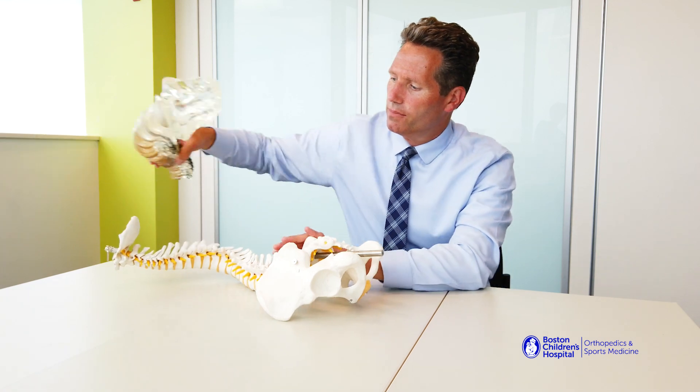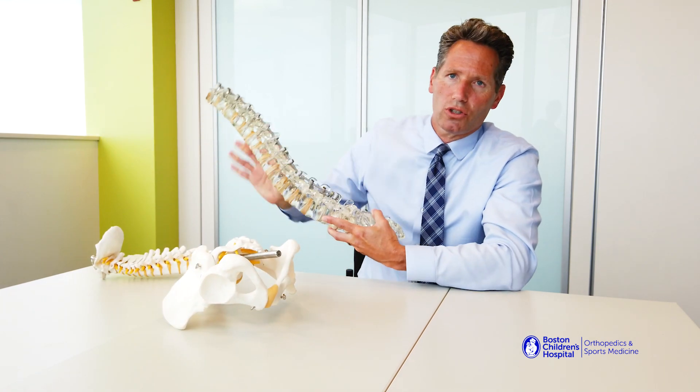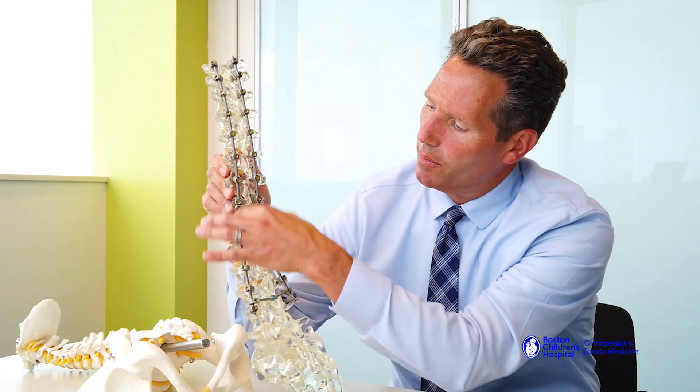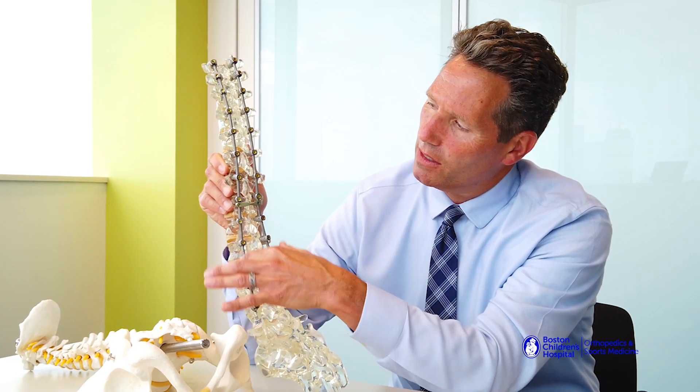Here's a spine model which is a representation of what's usually done in the operating room. So this is a back part of the spine model. Obviously this model has now rods and screws in it.